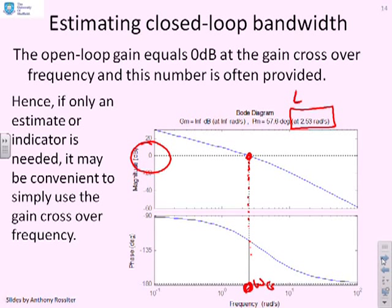If you can read the crossover frequency for 0dB without doing any calculation, then you might as well use that as an estimate for the bandwidth or for the closed loop bandwidth, because the actual closed loop bandwidth will probably be within 10 to 20%. Therefore, this is a good enough indicator.